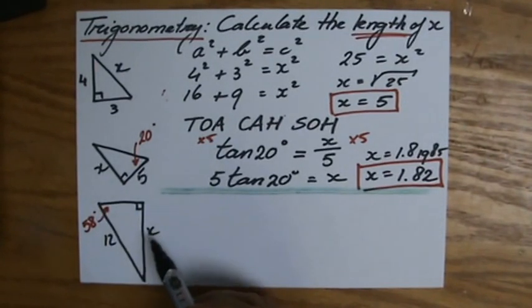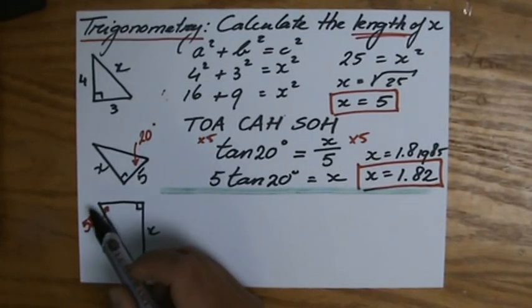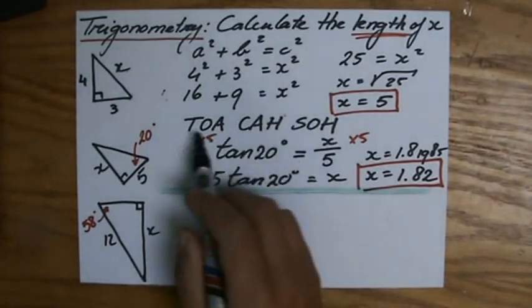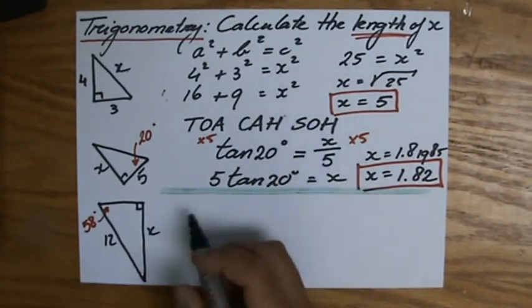58 degrees. I want to find out my opposite. They give to me my hypotenuse. Opposite hypotenuse, that's the sine.